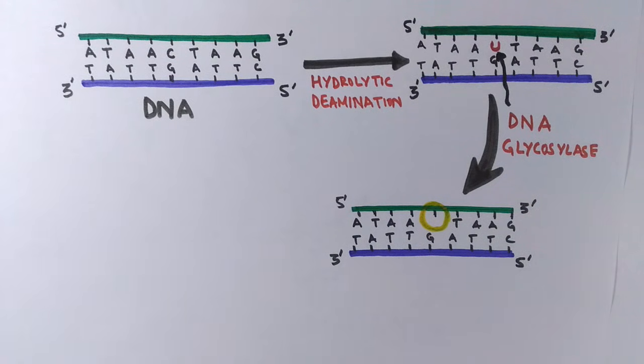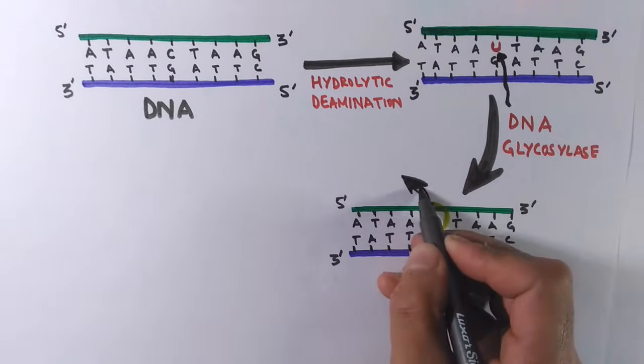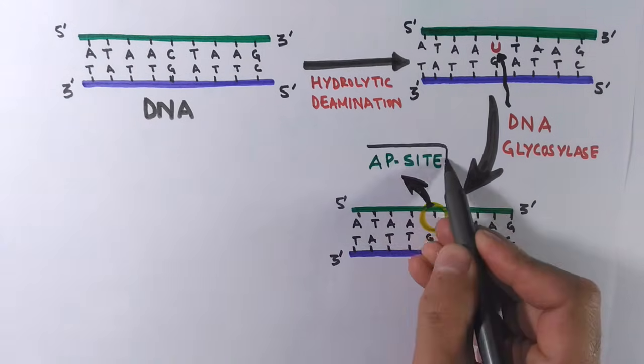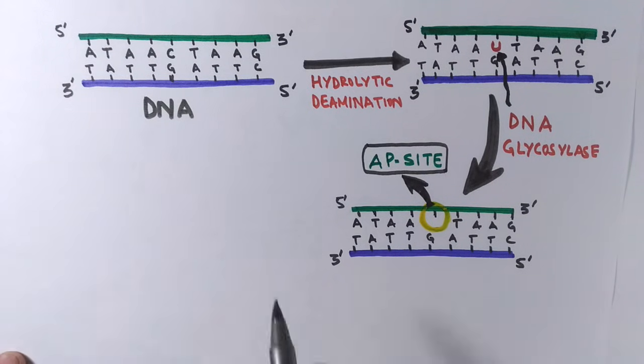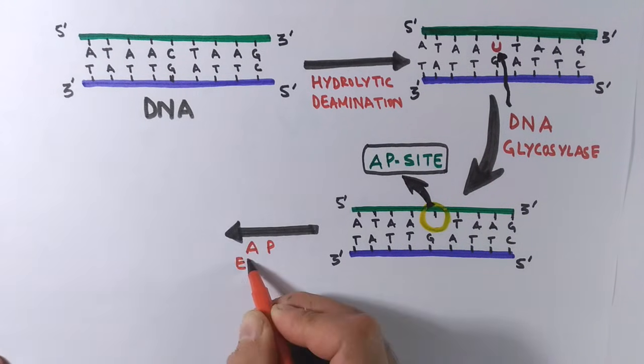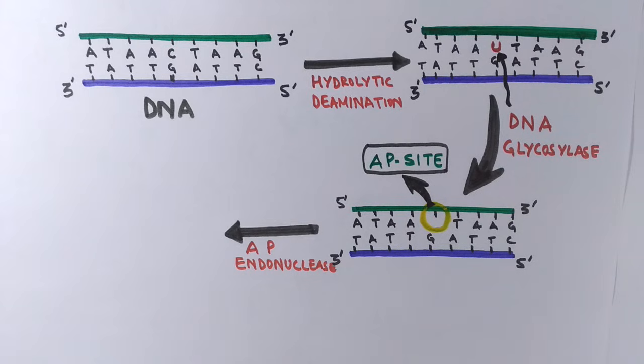This enzyme eliminates uracil from the DNA molecule by cleaving the N-glycosidic bond and initiating base excision repair. Now we have DNA with a removed base, and the site where the base is missing is termed the AP site.